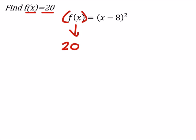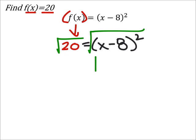So 20 equals x minus 8 squared. Let's do it. On this one, since I have something squared on one side and it's all squared and just another number on the other side, I can just square root both of these.